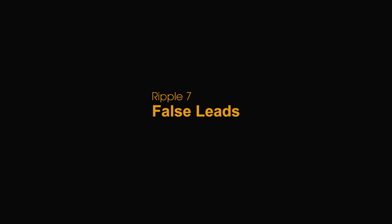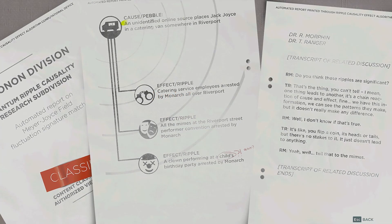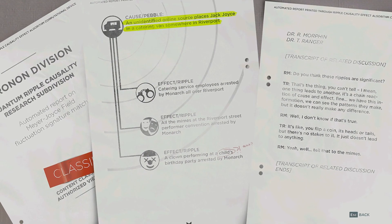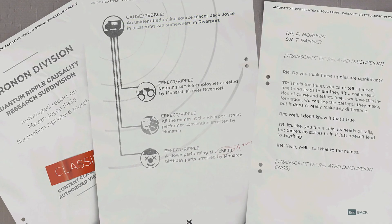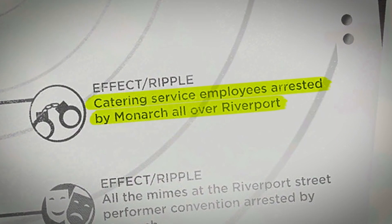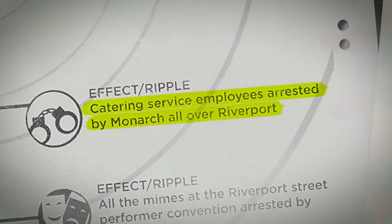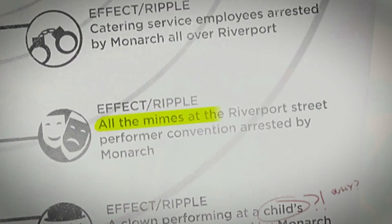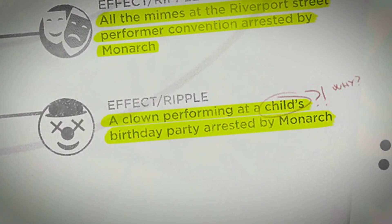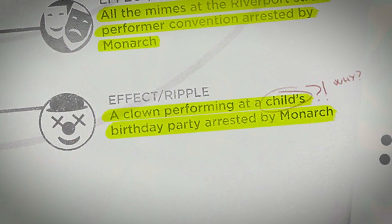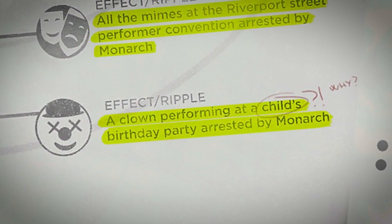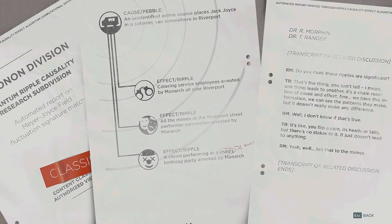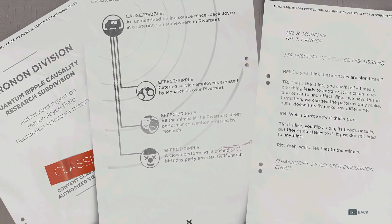Ripple 7: False Leads. Nature of pebble: an anonymous tip is placed stating that Jack Joyce was seen in the back of a catering van, done to create a false trail. As to be expected, catering service employees were arrested all over Riverport. To prove the point of chaos theory, mimes at a local street performance and a clown entertaining at a child's birthday party were also arrested by Monarch. Possibly someone from the catering company gave another false lead to the clowns or mimes as a frustrated joke.